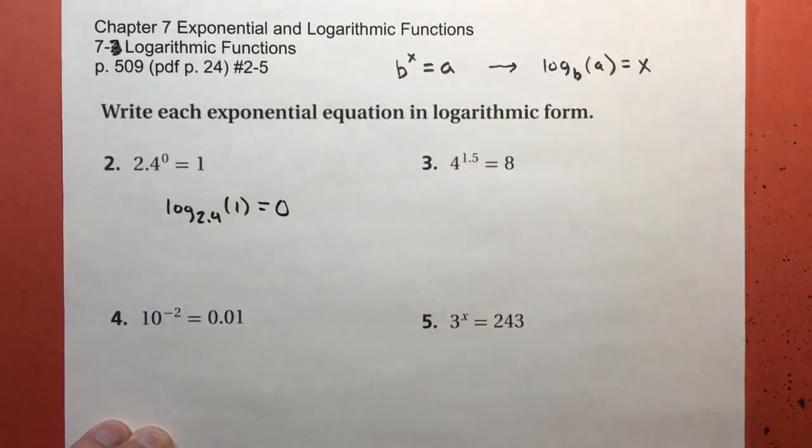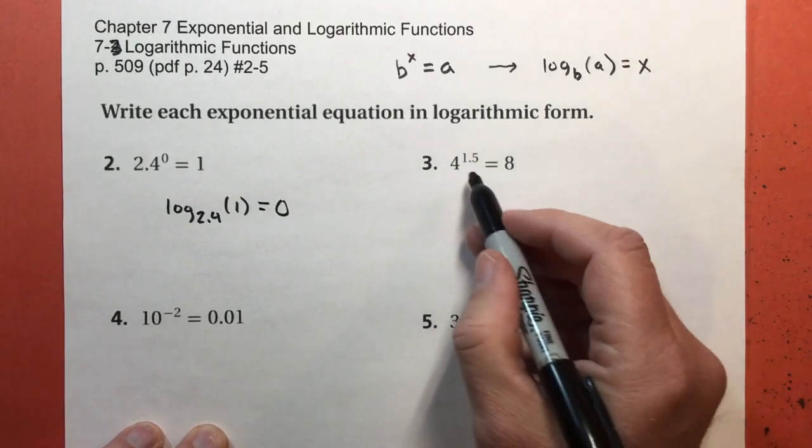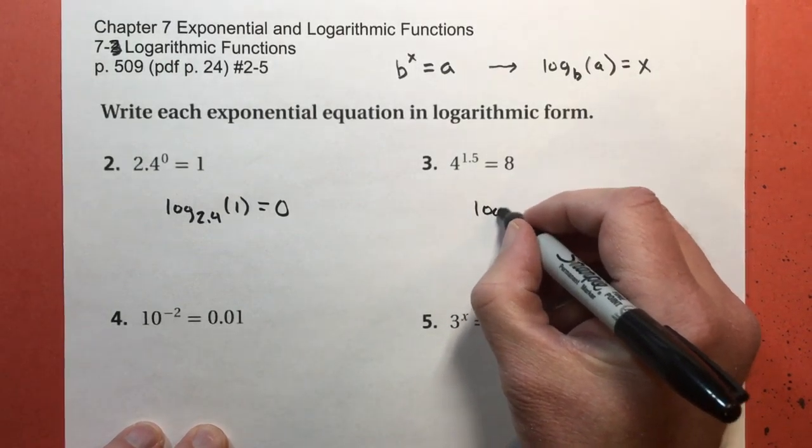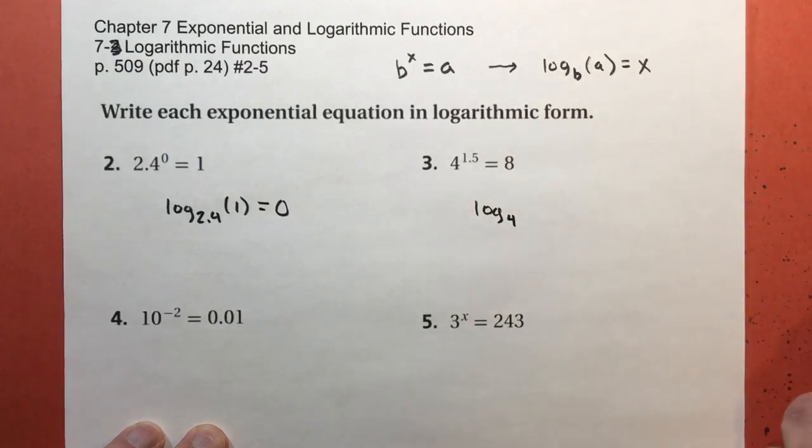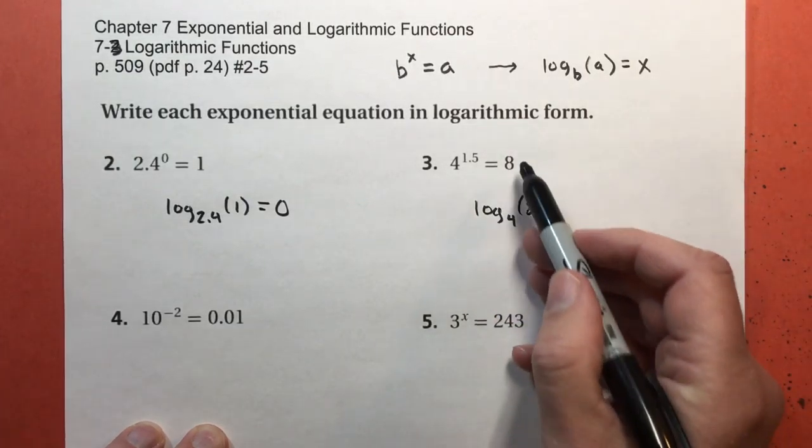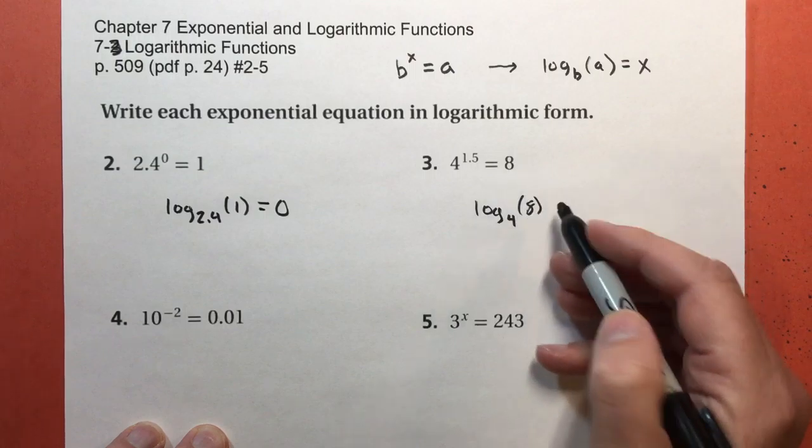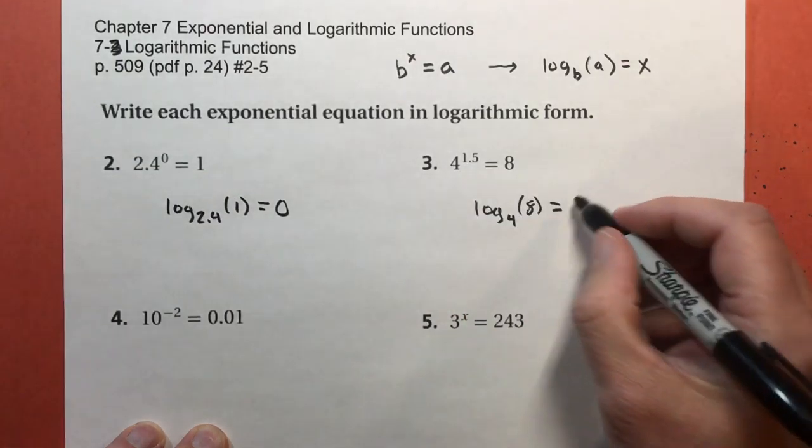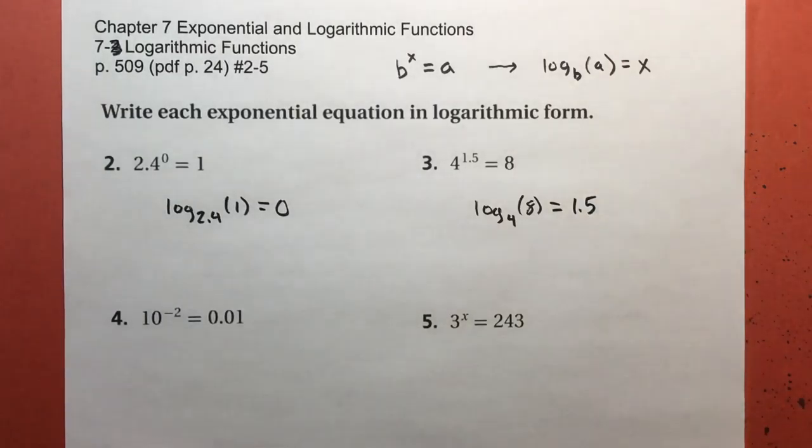The logarithm is the exponent, so this equals zero. That's all there is to it. Number three, the base is four, so I say log subscript 4 of 8, because the output here, eight, becomes the input. The logarithm is the exponent, so this equals 1.5.